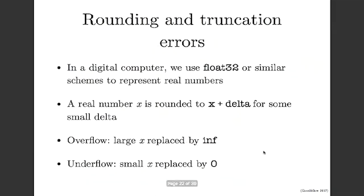When you use a finite number of bits to represent a real number, you get rounding errors and truncation errors. In deep learning we usually use float32 on GPU. A lot of these problems go away with float64, but that requires slower computation or moving to CPU and using more memory. So writing numerically precise code in float32 can be a big advantage.